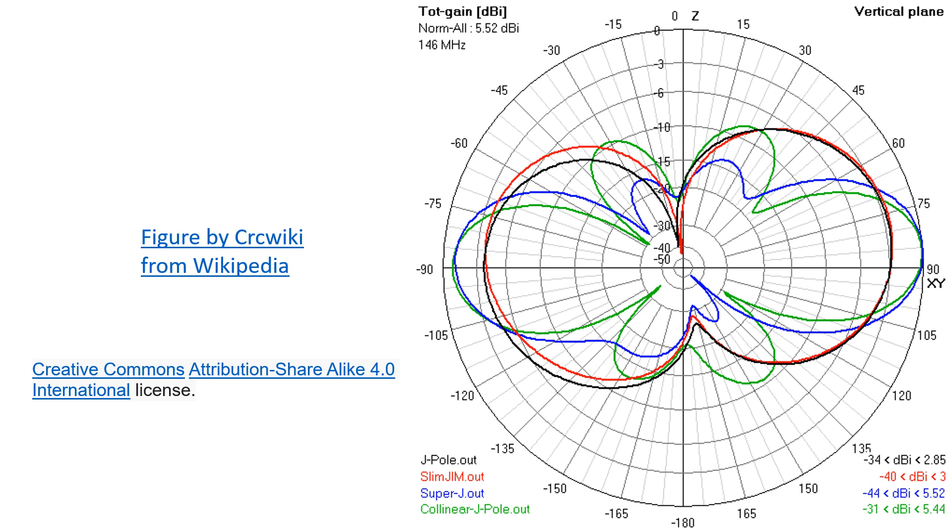Several pictures of radiation pattern of the antenna obtained by software modeling are also there on that page. I was quite surprised to find that the images on Wikipedia page have been contributed by KX4O. Here is another image comparing the radiation pattern of various types of J-pole antennas shown above.